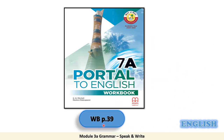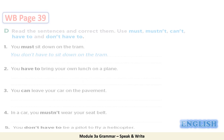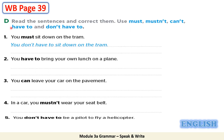Now open your workbook on page 39, go to task D. Read the given instructions: D. Read the sentences and correct them. Use must, mustn't, can't, have to, and don't have to. Here you have five sentences to correct using the words in blue. The first one is done for you: you must sit down on the tram → you don't have to sit down on the tram. Now work out sentences 2, 3, 4, and 5.